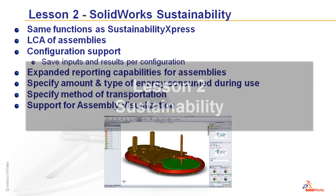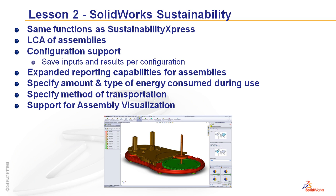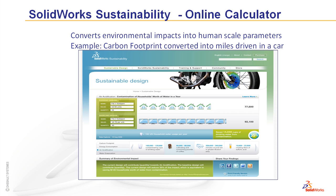Lesson 2 covers the use of the complete SOLIDWORKS Sustainability Package available for SOLIDWORKS 2010. It contains all the same functionality of SOLIDWORKS Sustainability Express and a very similar interface, but adds some additional features. Most notably, it supports assemblies and configurations, while Sustainability Express only allows part-by-part analysis. It also adds extended reporting capabilities and the ability to specify more clearly how a part will be used and transported. SOLIDWORKS Sustainability also integrates with an online calculator that provides real-world comparisons for the environmental impacts of your parts.